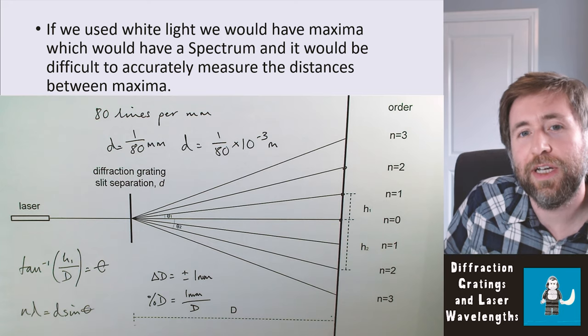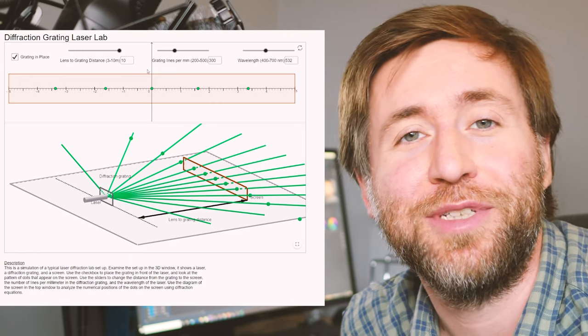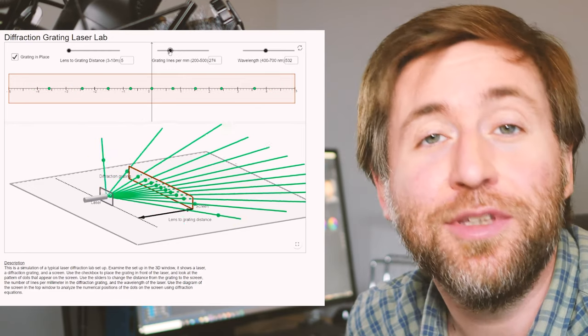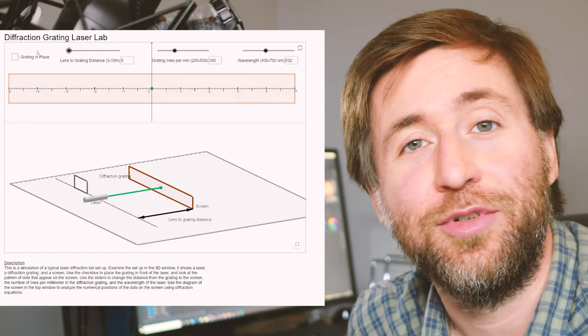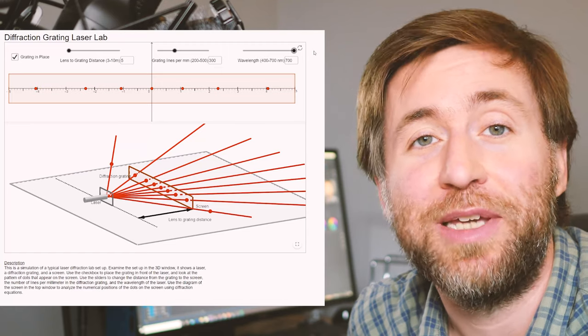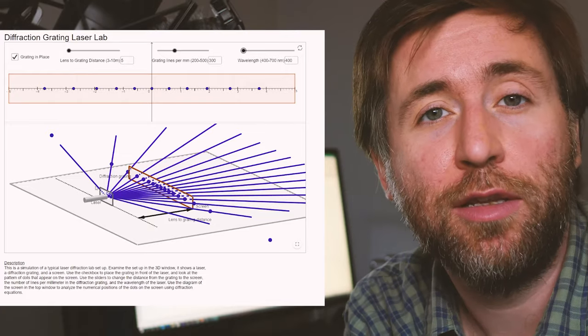If we use white light instead of a laser, we wouldn't see bright spots — we'd see a spectrum — making it very difficult to accurately measure the distances. I would definitely recommend trying a simulation before doing this practical in the lab. Using the OPhysics simulation, predict what happens to the pattern when you change from green to red or green to blue light: the bluer the light, the shorter the wavelength, the closer the dots; the redder the light, the further apart they are.